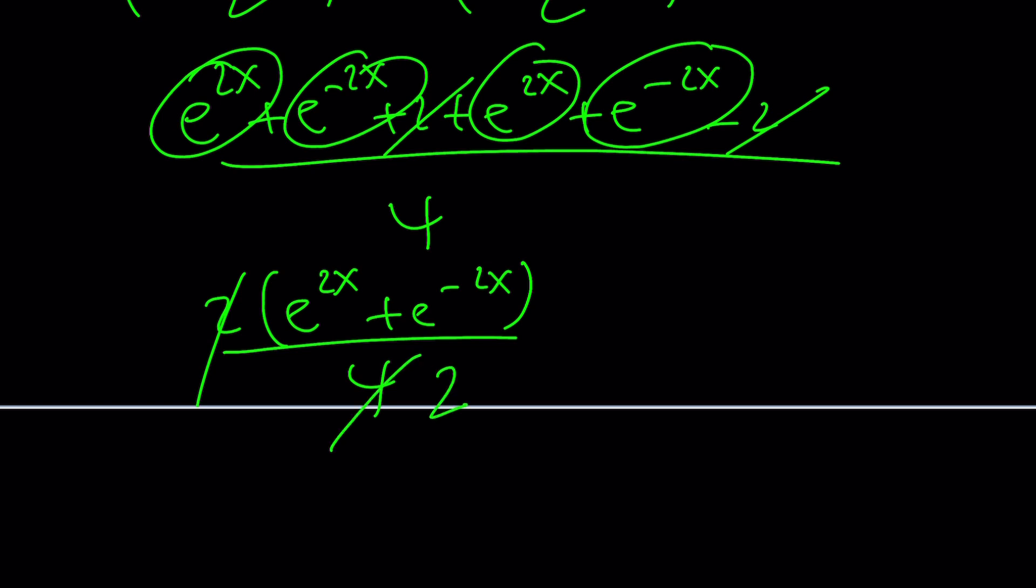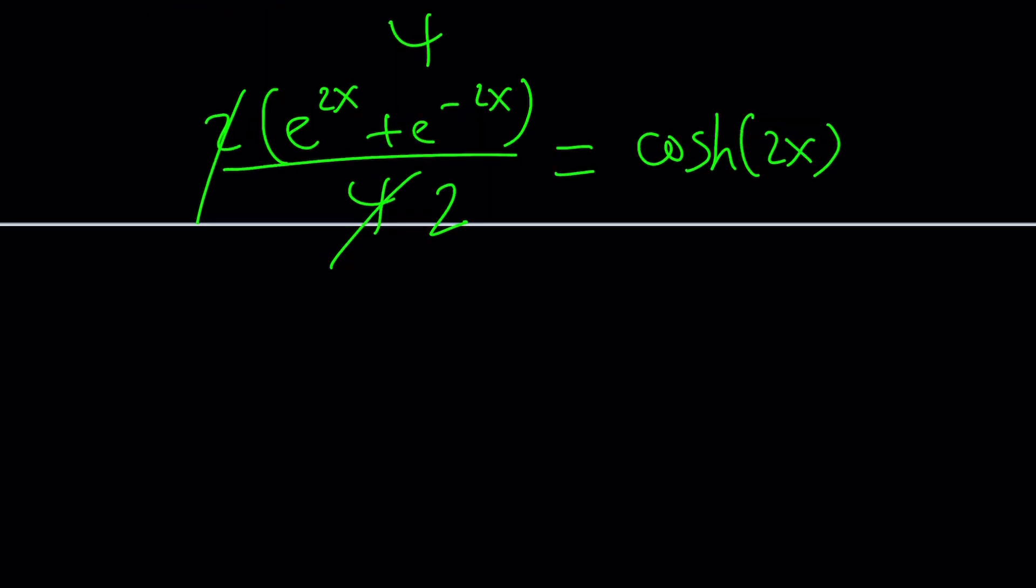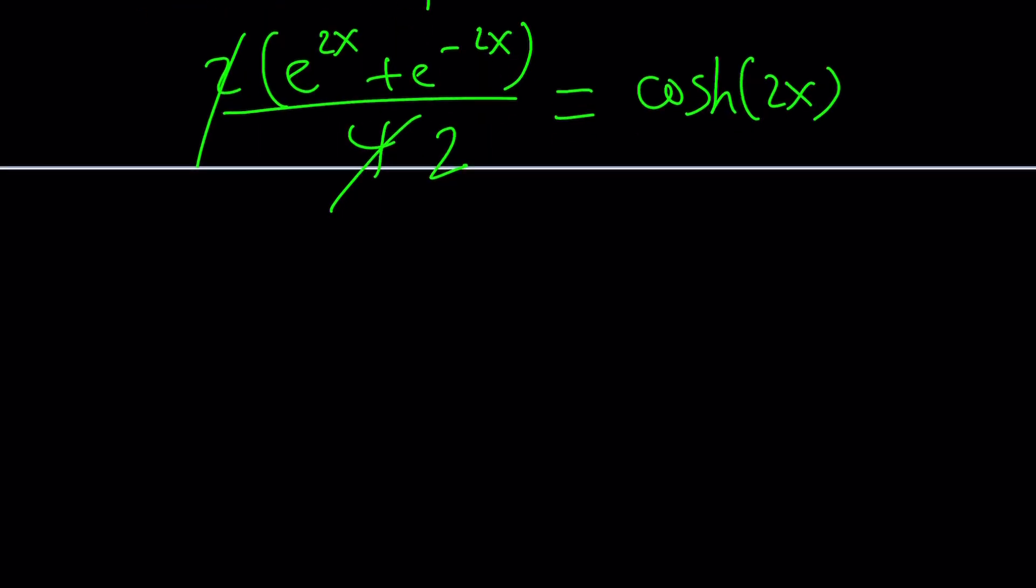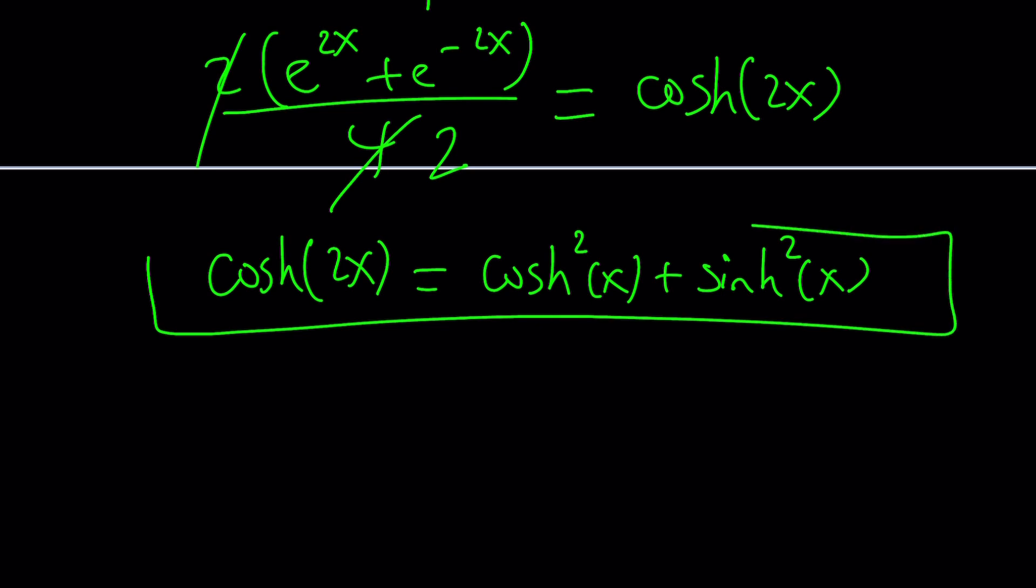Now the twos are going to cancel out. We're going to have two of these and two of those. So it's going to look like this: e to the 2x plus e to the negative 2x divided by 4. 2 goes into 4 twice. So this is going to give you kind of like the hyperbolic cosine, but instead of x we have 2x. So hyperbolic cosine of 2x would be the answer. So in other words, the Pythagorean theorem does not hold, but actually the double angle formula holds if you add up the squares.